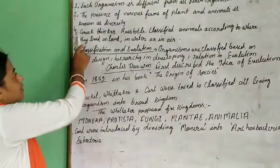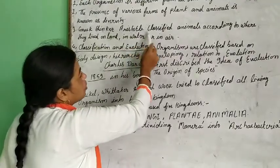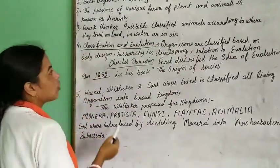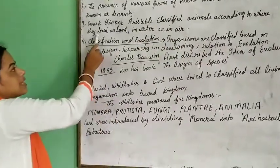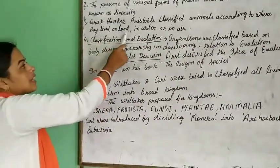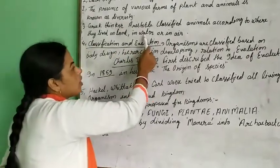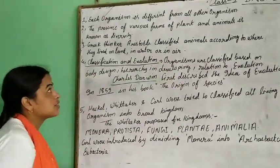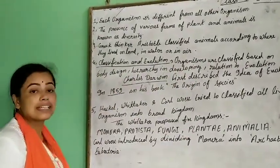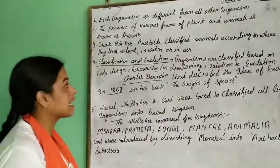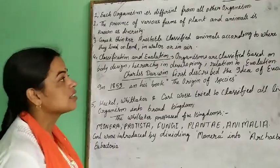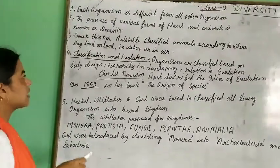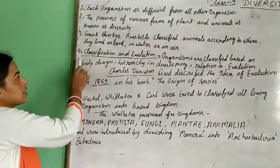Aristotle was a Greek thinker who classified animals according to where they live — on land, in water, or in air. Aristotle classified both animals and plants. Let's see their classification.